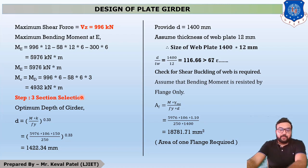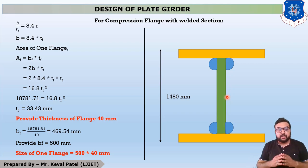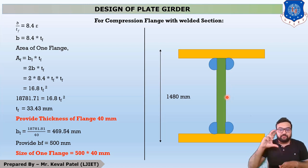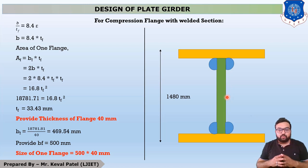Our plate girder section is a welded section — there is no rolled section. A rolled section means the section directly available in the market. When the span is very large, the bending moment and shear force generated require a greater depth. In the steel table, the maximum depth available is 600 mm. So when the span is very large and the bending moment is high, you must provide a higher depth section.